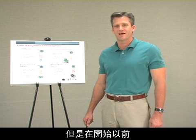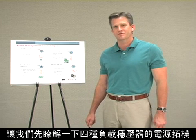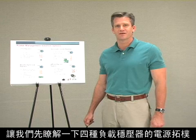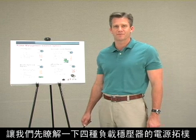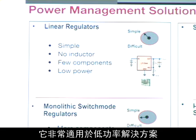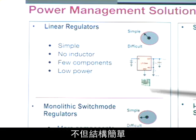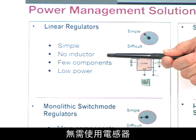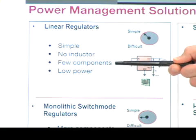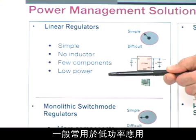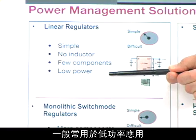Before we get into that, let's look at power topologies in the form of point-of-load regulators into four families. The simplest of them is the linear regulator. It's excellent for low power solutions — very simple with no inductor, a few components, and generally used for low power applications.